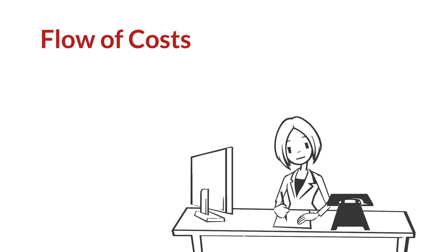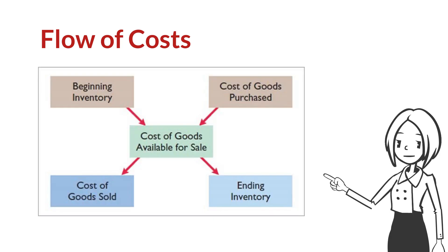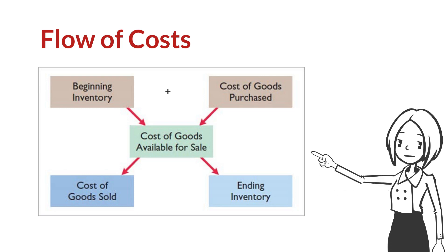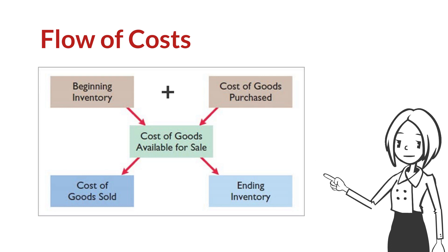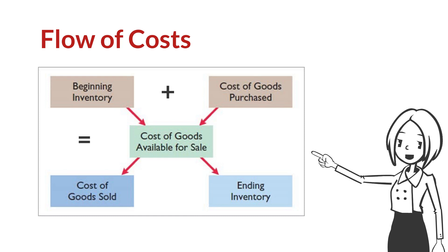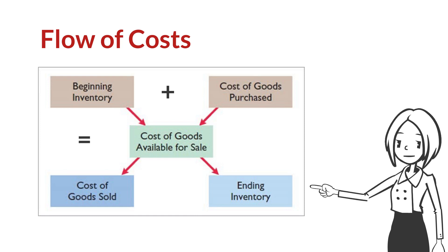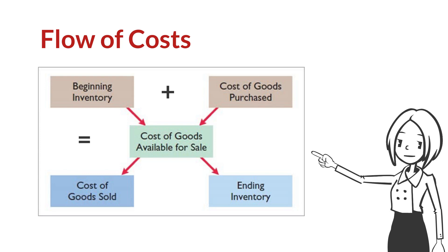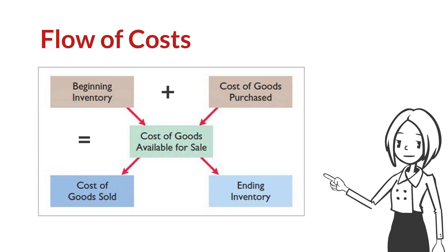Before we talk about perpetual and periodic inventory systems, let's briefly talk about the flow of costs. The flow of cost for a merchandising company starts with beginning inventory. We add the cost of goods purchased to arrive at the cost of goods available for sale. As goods are sold, they are assigned to the cost of goods sold. Those goods that are not sold by the end of the accounting period represent ending inventory.